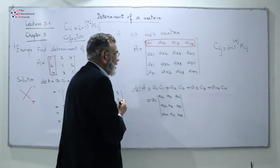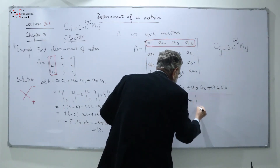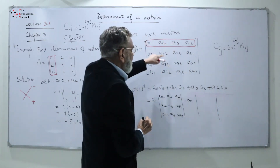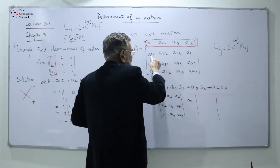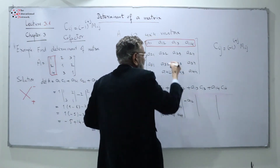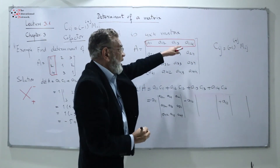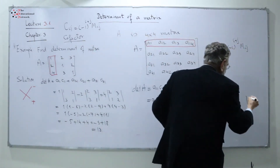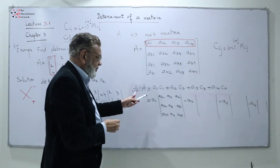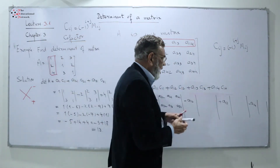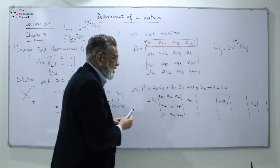For A12, the sign is (−1)^(1+2) = minus, so we get minus A12 times its cofactor — blocking that column gives A21, A23, and so on. For A13, the sign is (−1)^(1+3) = plus. For A14, since 1+4=5, we get minus A14 times its determinant. We block the corresponding column and row to obtain the remaining nine numbers for each 3x3 minor.